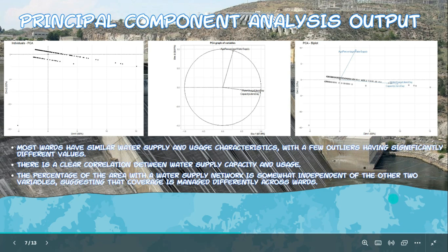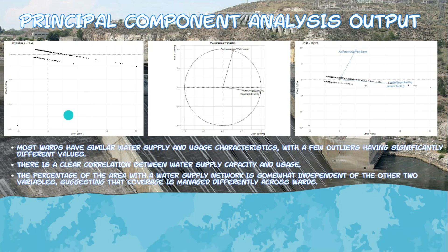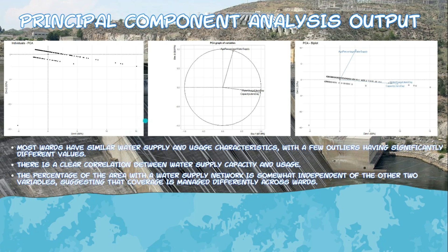Here's the output. First, we have the PCA graph of individuals. The x-axis shows Dimension 1 at 68% and Dimension 2 at 32%. Each point represents a ward in Surat, and their positions are determined by their scores on the two principal components. Wards that are close together have similar characteristics in terms of water supply capacity, water usage, and percentage of area with a water supply network. The spread of points indicates variability among wards, and wards positioned higher on Dimension 1 have a higher percentage of area with the water supply network.